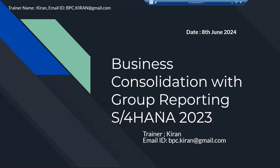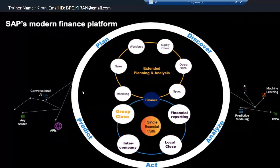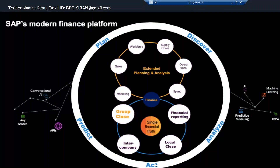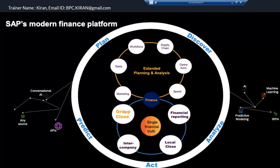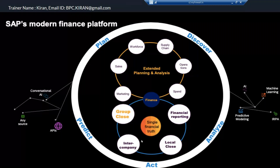For the actual side, your FI day-to-day transactions, FI close, intercompany, and group close — all part of this actual data. For legal consolidation, there are two tables involved. For the local close, we use the ACDOCA table, the universal journal table. For group close, we use the ACDOCU table, which is the group reporting table.